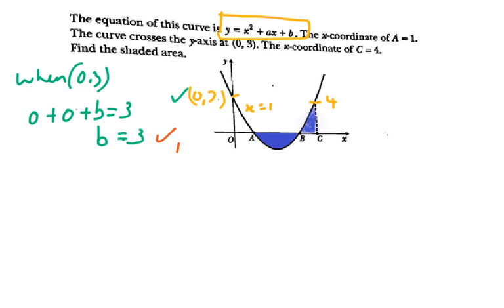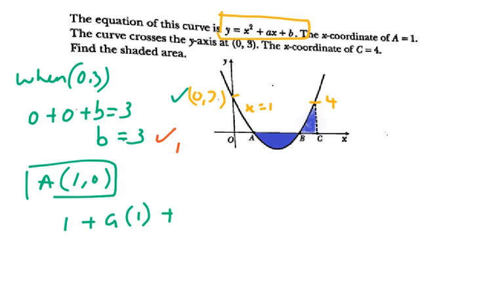Next, we use the coordinate of A, where x is equivalent to 1 and y is 0. Substituting this coordinate (1, 0) into the equation, you get 1 plus a times 1 plus b equals 0. From here, substituting b equals 3, you will be able to get a is equivalent to negative 4. So you now have both a and b, and the next step is to put them into the equation.